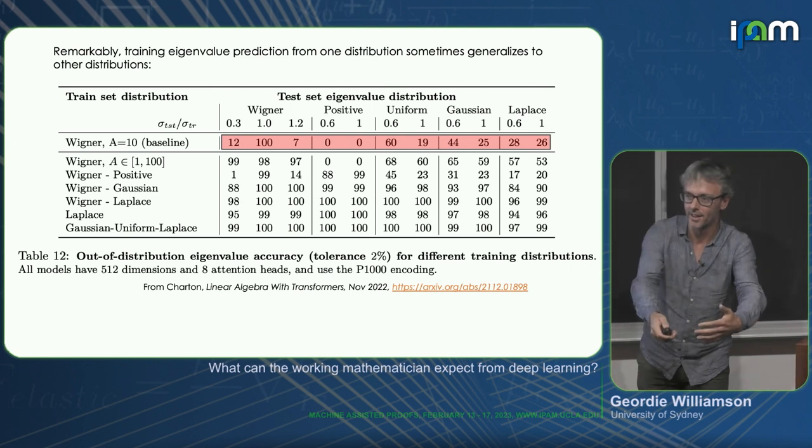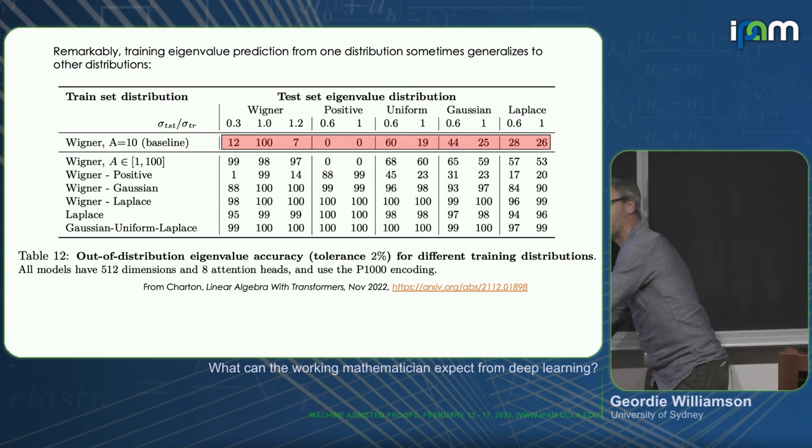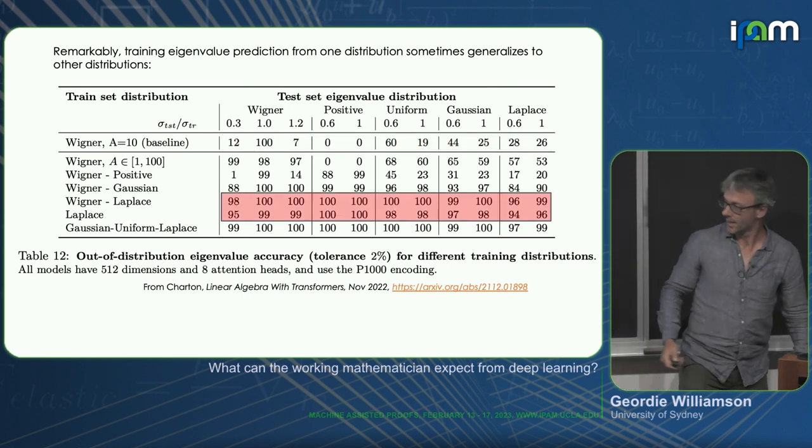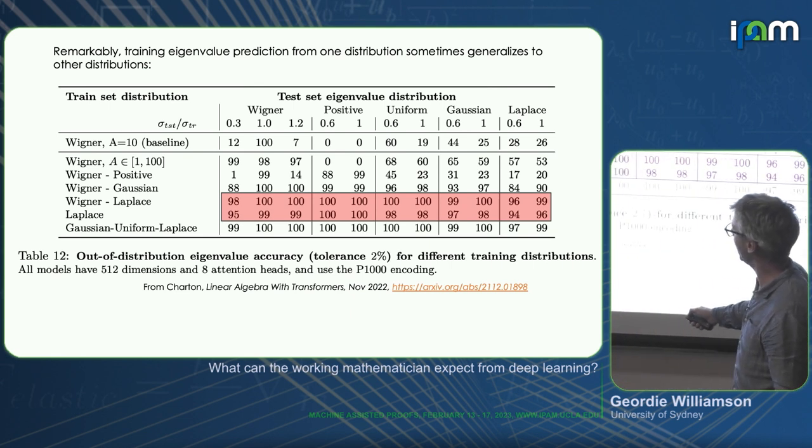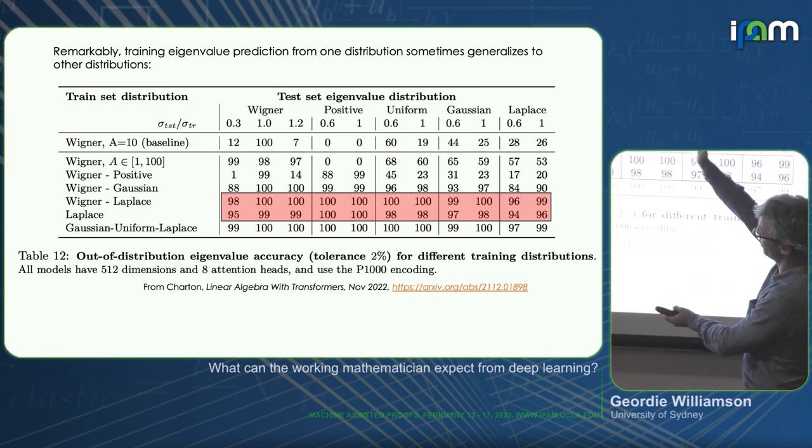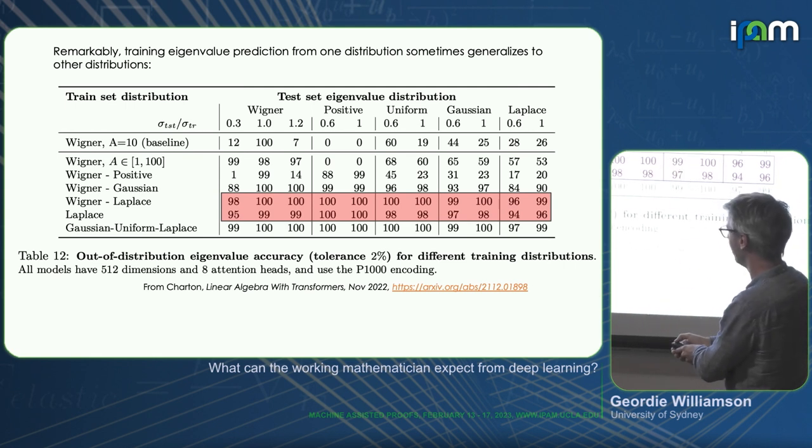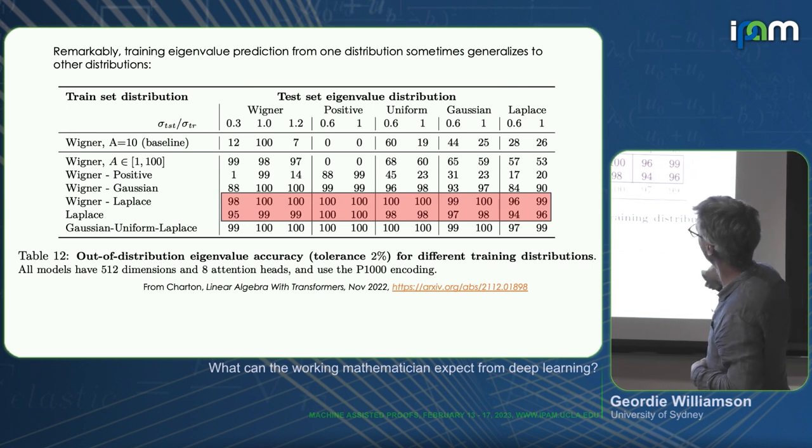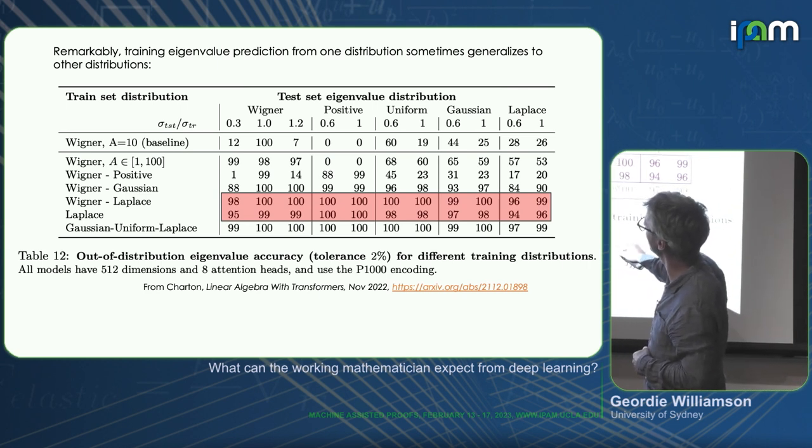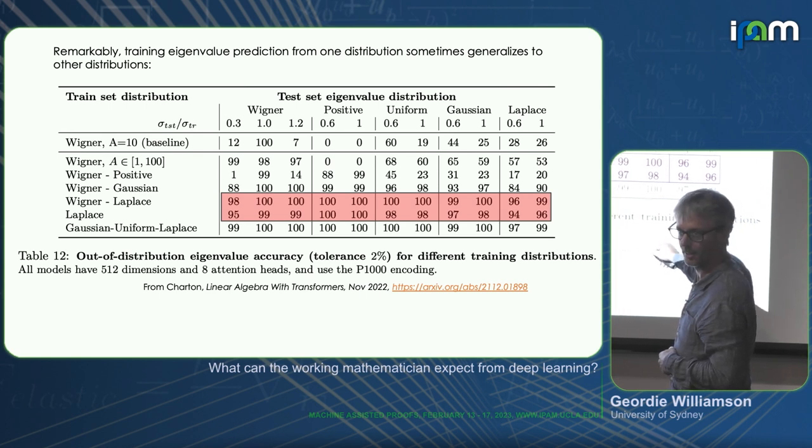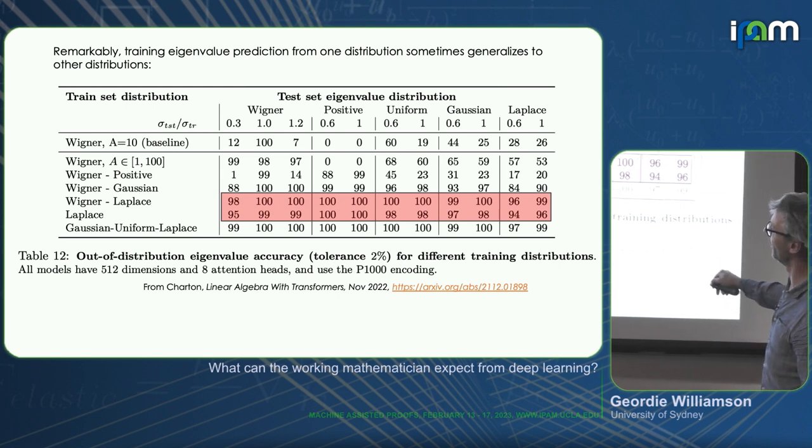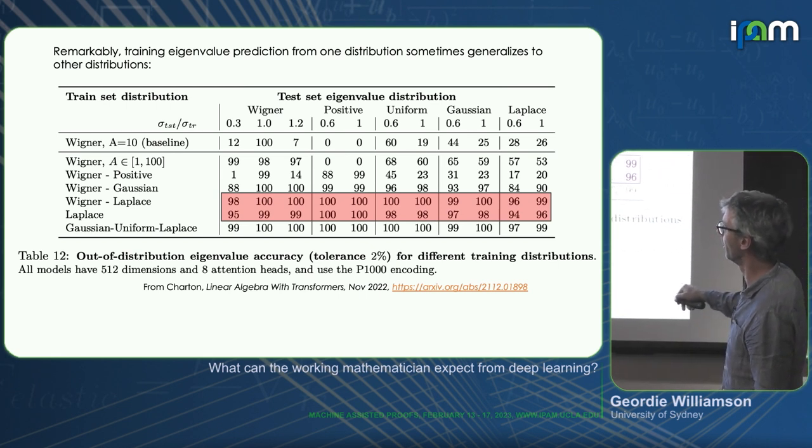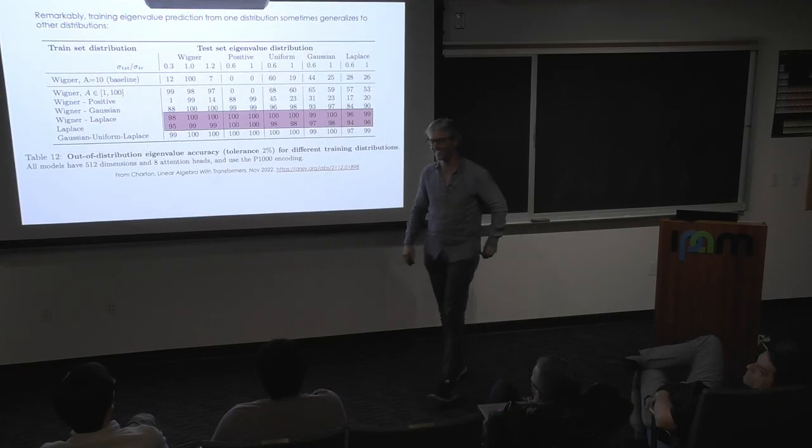So this is really remarkable, I think. So here, it's trained either on Wigner, Laplace. So Laplace is just another distribution, very important. But here, you're taking Wigner matrices sampled from a Laplace distribution, and notice this generalizes very well across all these different distributions. Here it's kind of remarkable, it won't have seen a single matrix, all of whose eigenvalues are positive in training. And yet it's an example where the training distribution is incredibly important. It also doesn't know which of those symbols are supposed to be positive. Yeah, that's true.